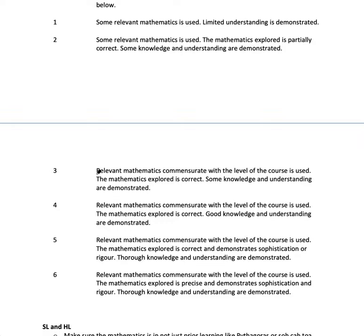So commensurate with the level of the course can be standard level. So if you're doing an IA, a higher level IA, on a fairly basic quadratic equation, like a basketball shot, you can get to 4 because it's relevant, commensurate with the level of the course, and you can show good knowledge and understanding. So you can get to 4, but you can't get to 5.